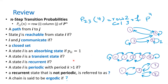A state is transient if there is a way to leave it and never be able to return. For example, states 1, 2, and 3 in the gambling game are transient — you can go from 1 to 0 or 4, and once in 0 or 4 you cannot return to state 1. States 0 and 4 are recurrent, not transient, because there is no way to leave them in the first place.